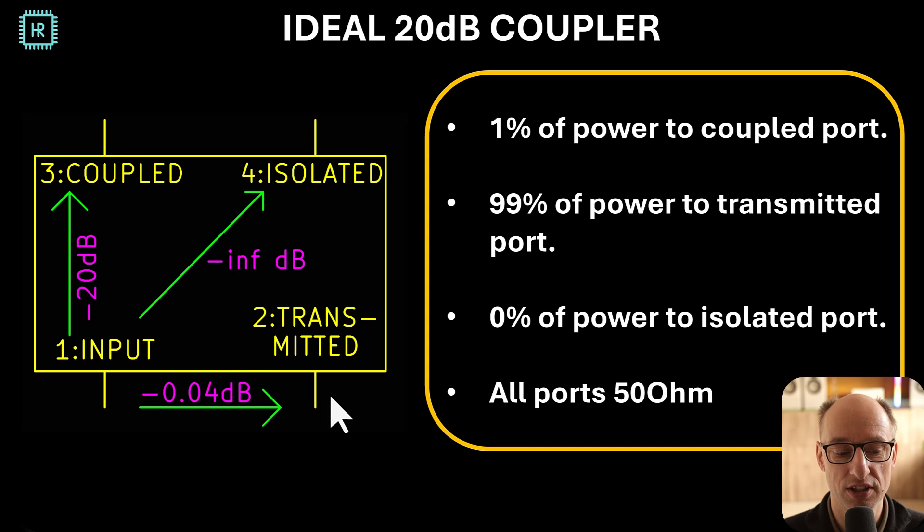The isolated port receives nothing and the transmitted port receives minus 0.04 dB. That's one percent of power loss. In reality of course there will be a little bit more loss because this is perfectly ideal. And also in reality this number from input to isolated will not be minus infinity.